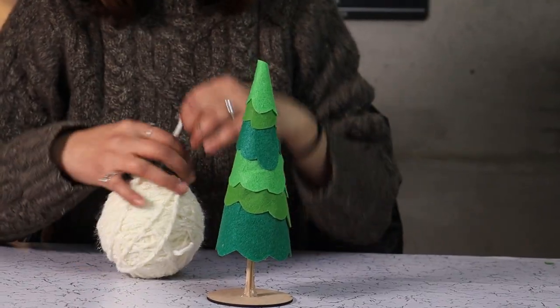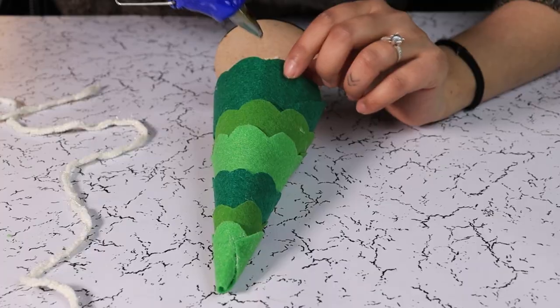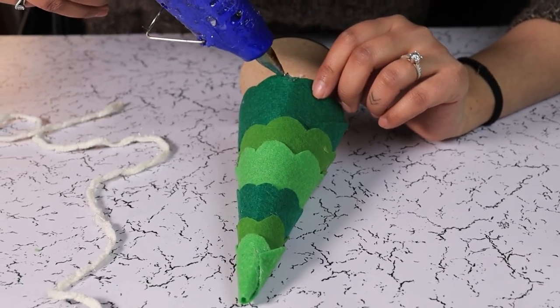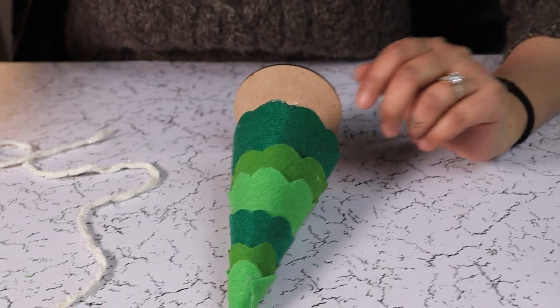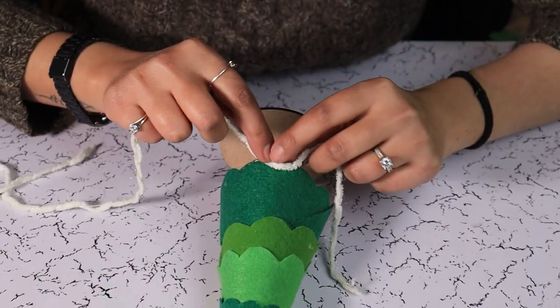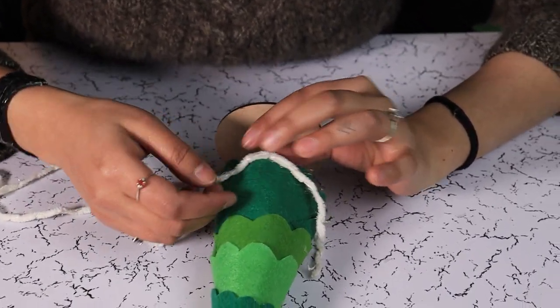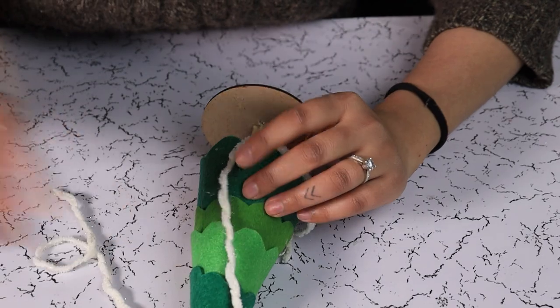For final touches, we are using this sparkly yarn as lace. Just add a little glue to the base lines and glue our sparkly yarn.